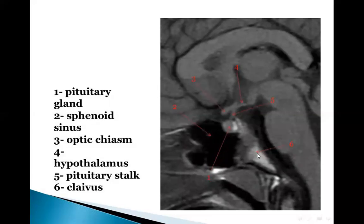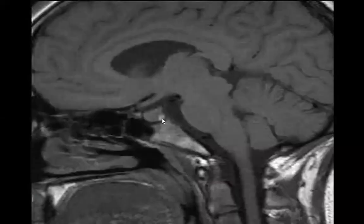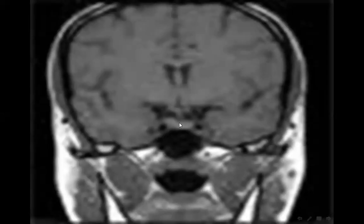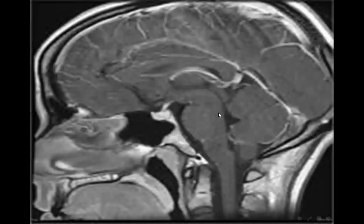This is the sagittal section of T1 MRI showing the pituitary gland and the stalk or infundibulum. This is T1 sagittal MRI with IV contrast. With contrast, you can see the anterior part and the posterior part — it appears hyperintense.